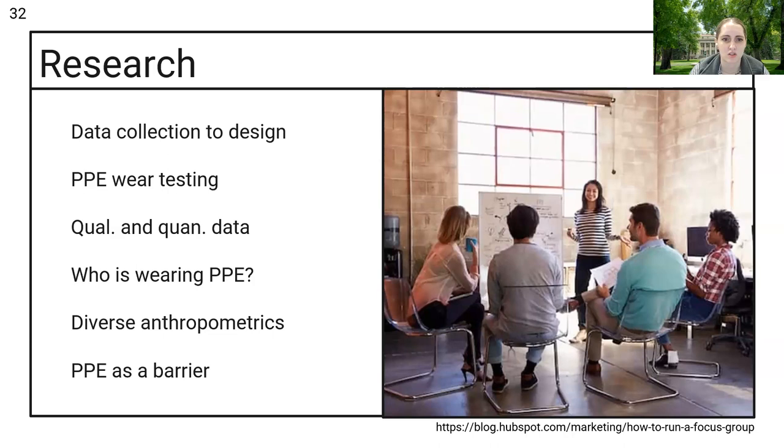We also need to understand who is wearing PPE and who do we want to be wearing PPE. Traditionally, maybe men have been more in the labor force in workplaces like construction. But we want women to be joining these workforces. We want more diverse types of people in lots of different jobs. Not only who is currently wearing PPE, but who are we looking for in the workforce? How can we start providing PPE for them proactively? This will lead to an understanding of diverse anthropometrics and considering PPE as a barrier to participating in certain workforces.